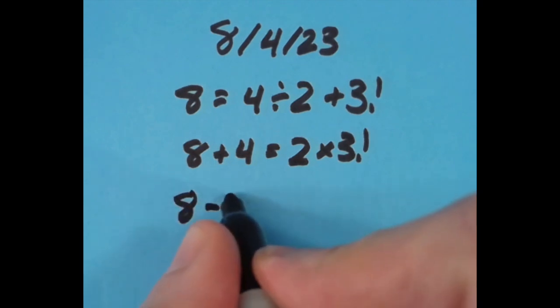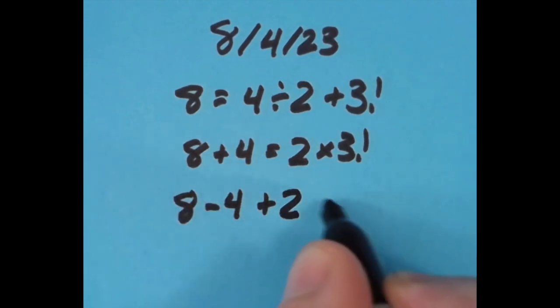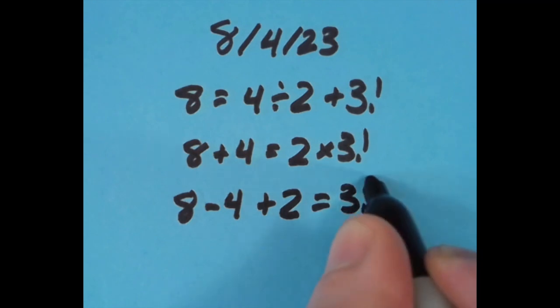Then I did it one more time. Here I said that 8 minus 4 is 4, and 4 plus 2 is 6, and again we're going to use 3 factorial there, so we get 6 on both sides. Anyway, that's what I chose to do for today's date.